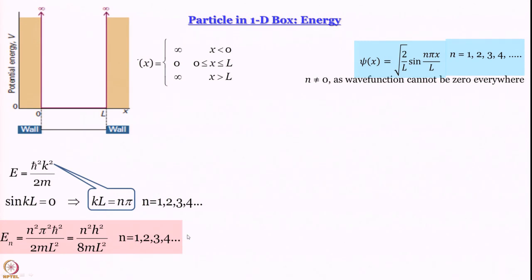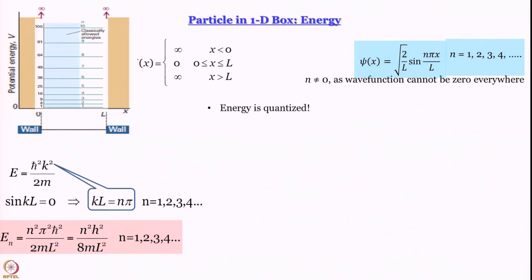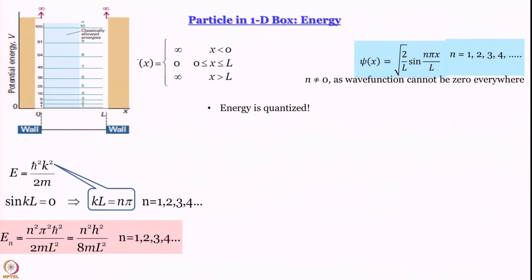What just happened? Quantization of energy happened. Only certain values are allowed. Now, n turns out to be a quantum number for the particle in a box. This is the beauty of Schrödinger's treatment: unlike Bohr's treatment where quantum numbers fell from the sky, quantum numbers arise naturally simply from the probabilistic interpretation of the wave function provided by Max Born. Energy, momentum, angular momentum — these are all quantized, and everything arises from the imposition of some boundary condition.